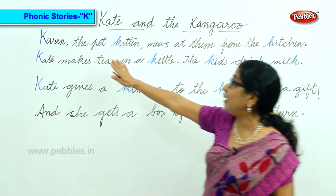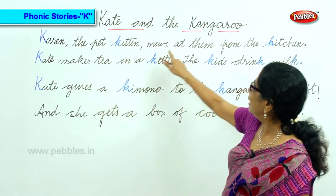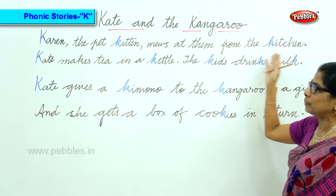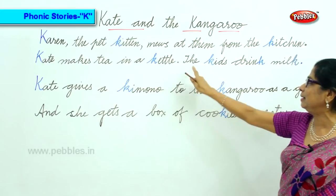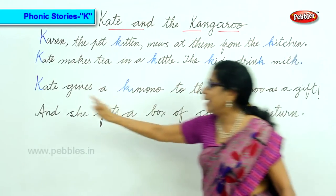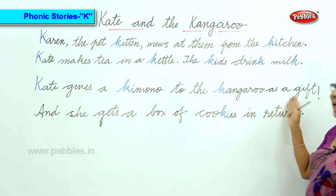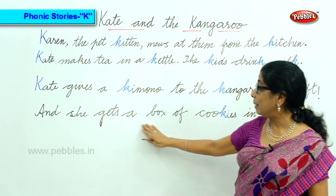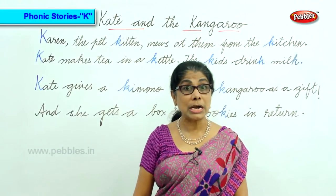So the continuation of Kate and the Kangaroo, K sound. Karen the pet kitten says meow to them from the kitchen. Kate makes tea in a kettle. The kids drink milk. Kate gives a kimono to the kangaroo as a gift, and Kate gets a box of cookies in return — all K sound.